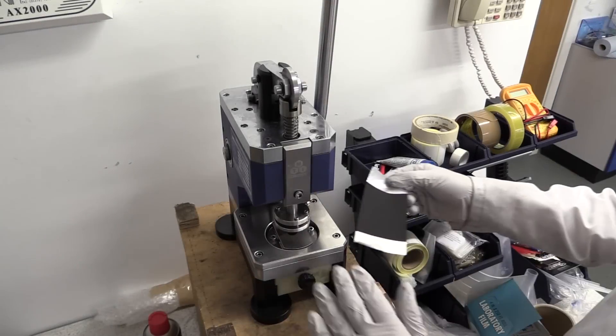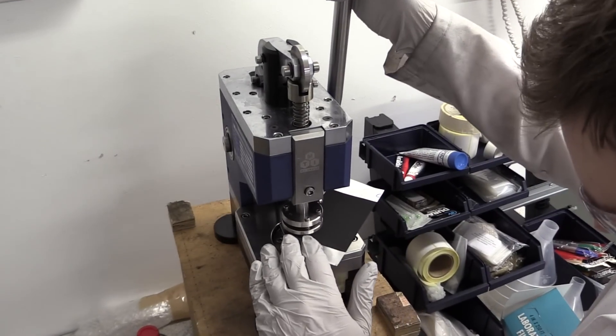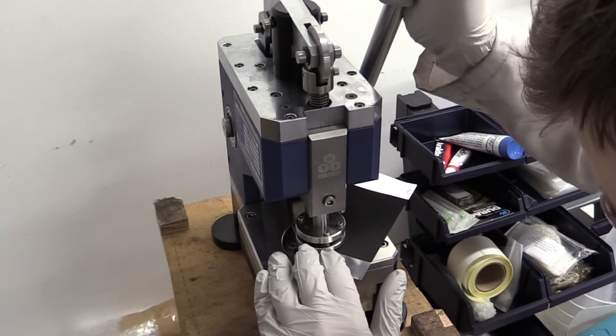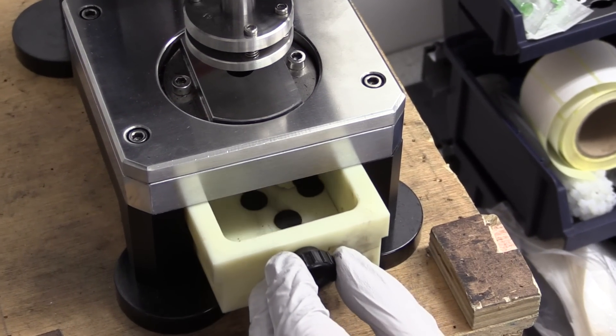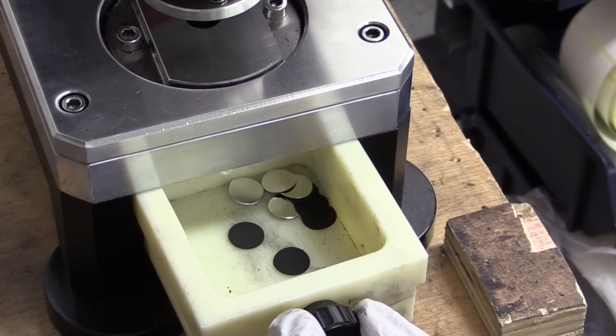After this, 16mm diameter disc shaped electrodes are cut from the sheets using an electrode punch. This size is chosen as it fits easily inside the CR2032 coin cell cases that are available to us.